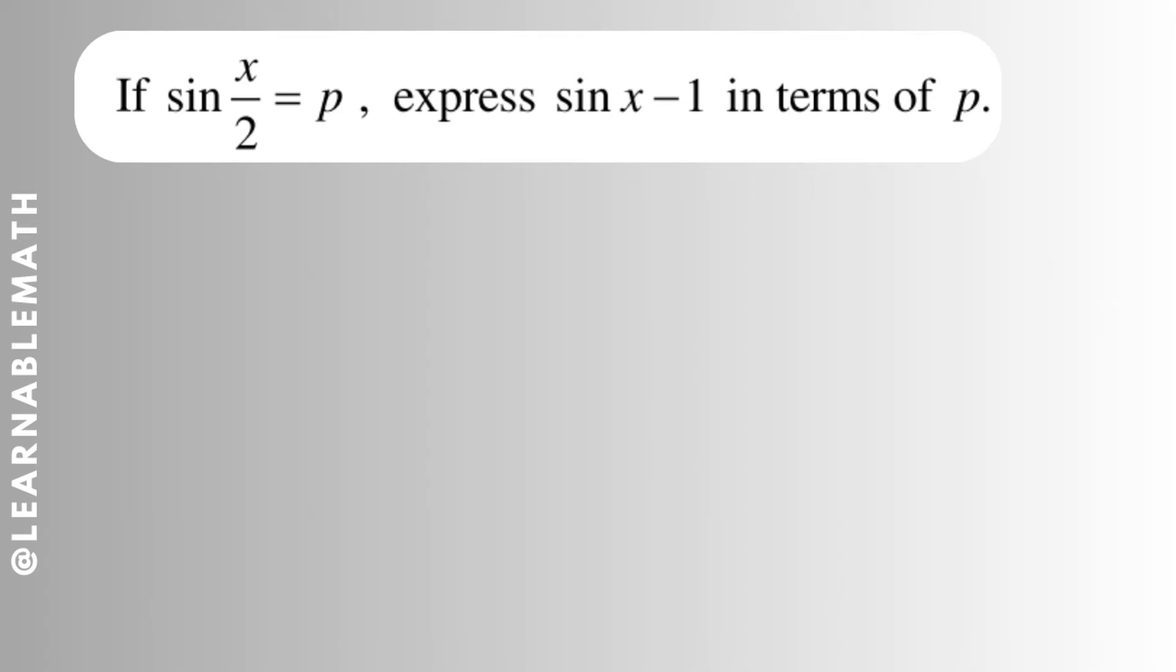Most of you might think of using the triangle method to express this in a triangle. Because it's positive, sin(x/2) = p positive, I will draw it in the quadrant where sine is positive, the first quadrant. I have x/2, the half angle, and this is opposite over hypotenuse.